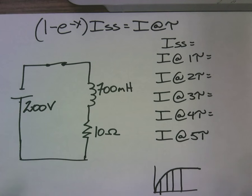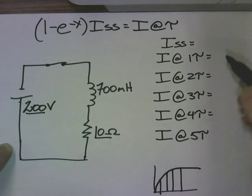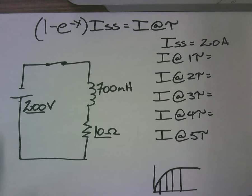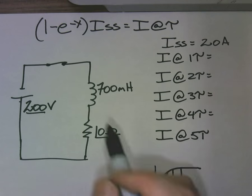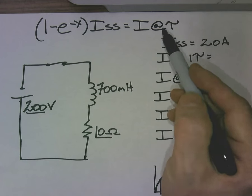Let's walk through how to do this using that calculator method. First off, we need our I_SS. 200 volts divided by 10 ohms gives me 20 amps. Then I know that I've got that formula. 1 minus e to the negative x times steady state current gives me the current at different tau's.